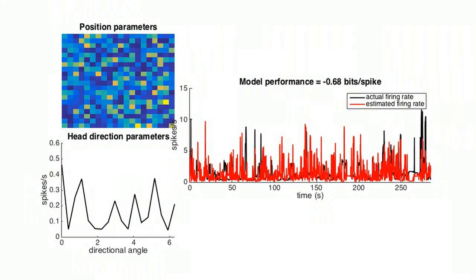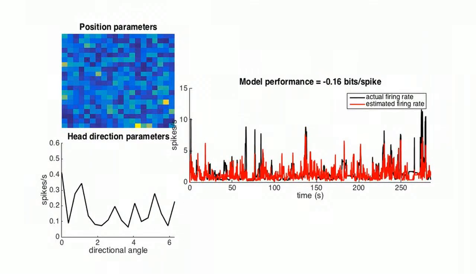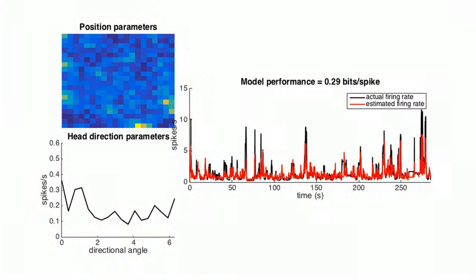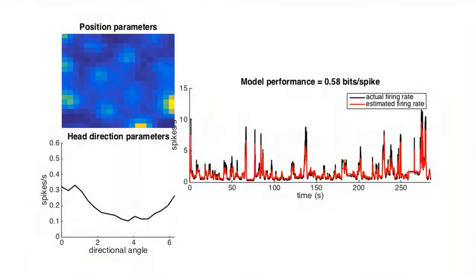In essence, the model finds tuning properties of each variable that generate a spike train that is most similar to the recorded spike train. We can then use these final tuning curves to gain insight into how that cell encodes these navigational variables. By changing which variables are given to the model, we can also determine which variables are most influential for determining spiking.